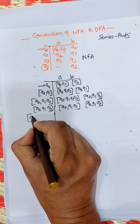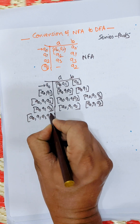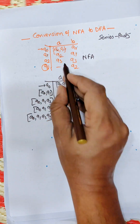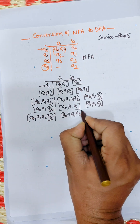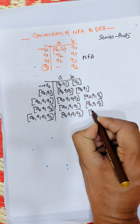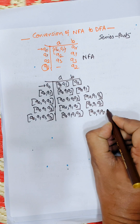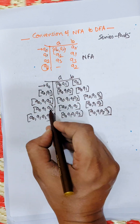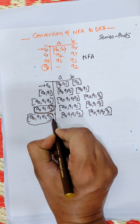For the new state Q0Q1Q2Q3 on input a: we get Q0Q1Q2Q3, and on input b: Q0Q1Q2Q3. All output states are the same as the input state. The final state of the NFA is Q3, so any DFA state containing Q3 will be a final state.